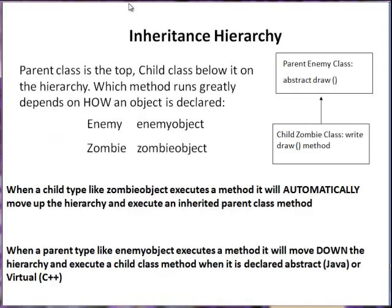Inheritance is a hierarchy: the parent class is at the top, child class below it. Which method runs greatly depends on how an object is declared. Enemy object is declared type enemy, the parent class; zombie object is declared type zombie, the child class. When a child type executes a method, it automatically moves up the hierarchy to execute an inherited parent class method. When a parent type executes a method, it moves down the hierarchy and executes a child class method when declared abstract or virtual. Abstract or virtual reverses the direction — telling it to move down to the child and execute the method there.